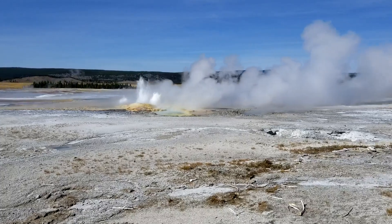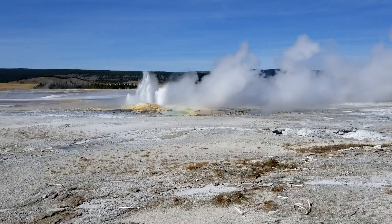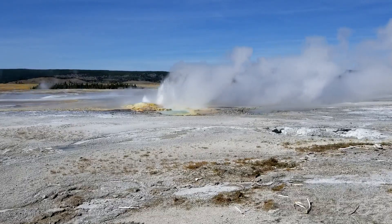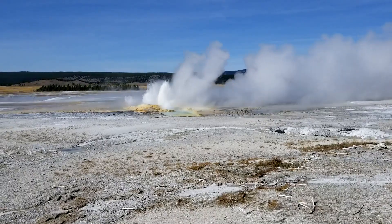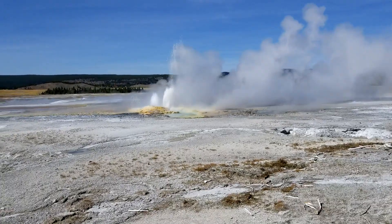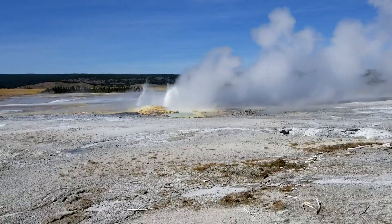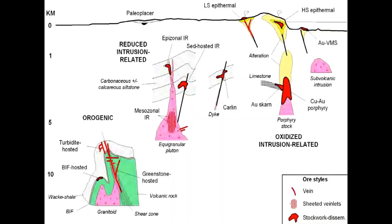The surface expression would look something like this Yellowstone hot springs photo — water coming out onto the surface. But not all gold and silver deposits form in hot springs type systems. That's the nearest-surface type of stuff. In this diagram, the epithermal deposits are the ones shown on the right-hand side, forming very near to the surface.